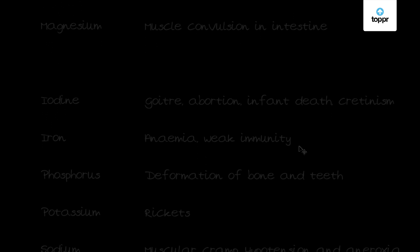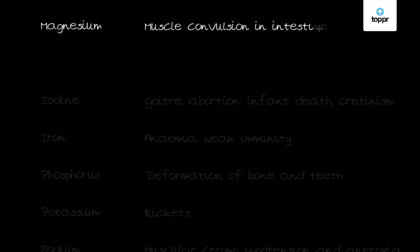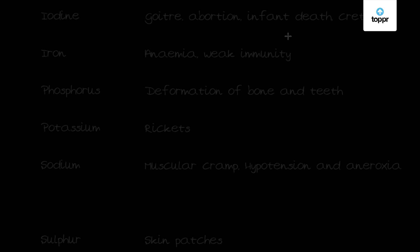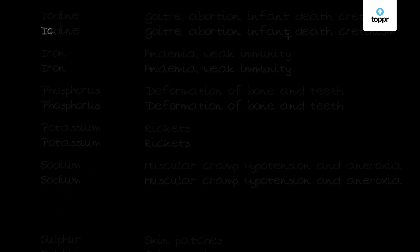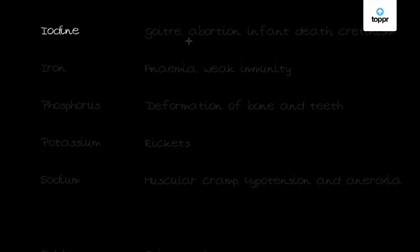Next, let's look at magnesium. Magnesium is important because it acts as an enzyme activator and is also required in muscle relaxation. The deficiency of magnesium causes muscle convulsions in the intestine, which is one of the most common diseases arising from magnesium deficiency.